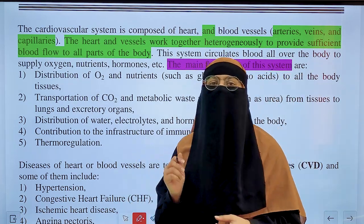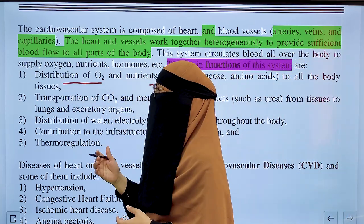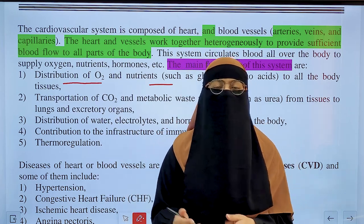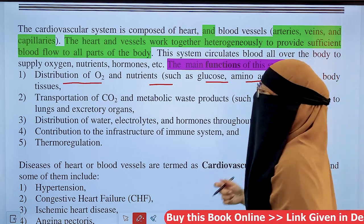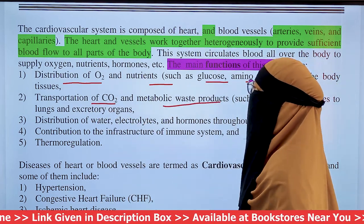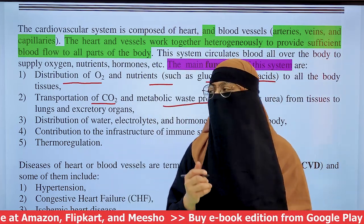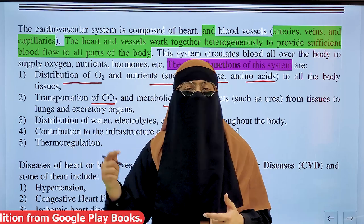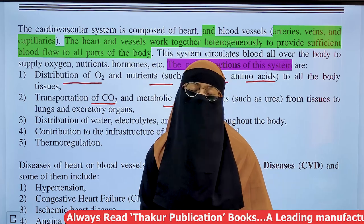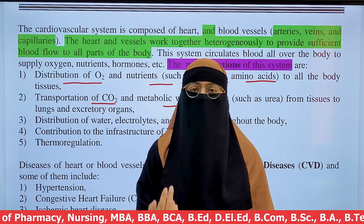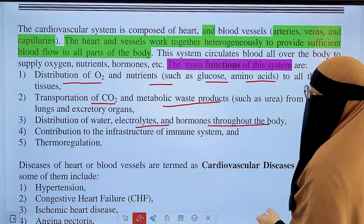The first and most important function is distribution of oxygen and nutrients. The cardiovascular system transports nutrients such as glucose and amino acids, and also transports CO2 and metabolic waste from the tissues to the lungs and excretory organs. The next function is distribution of water, electrolytes, and hormones for the body.